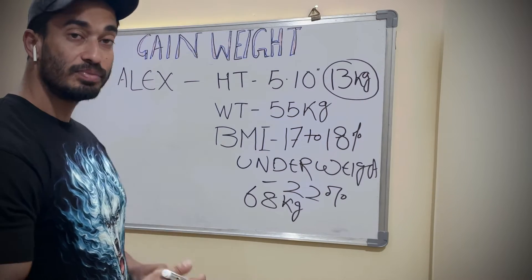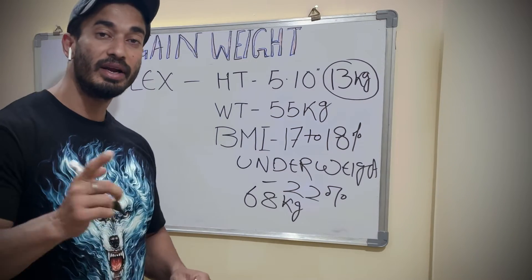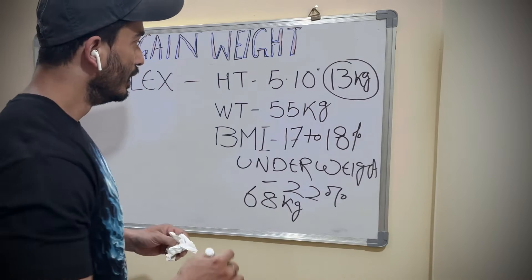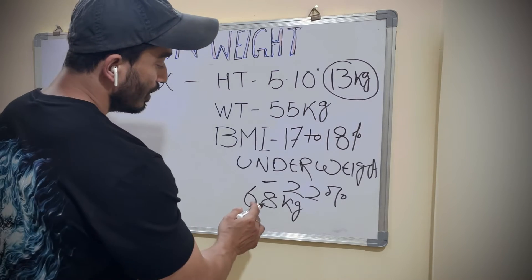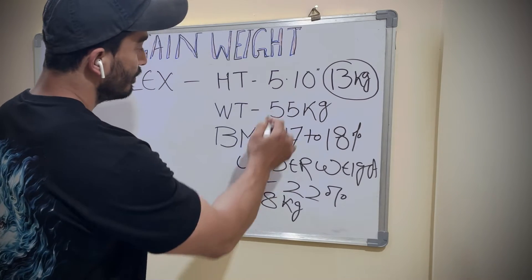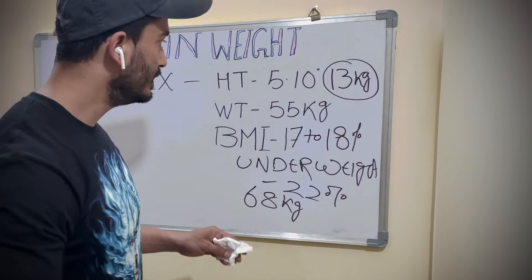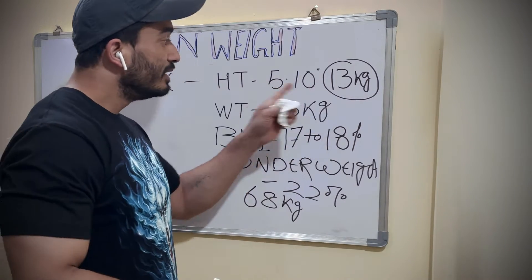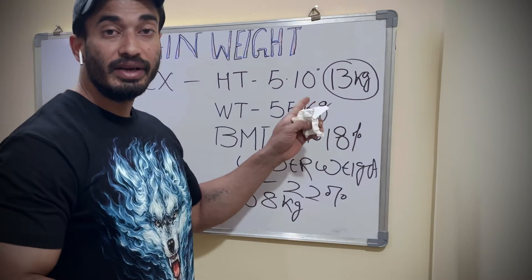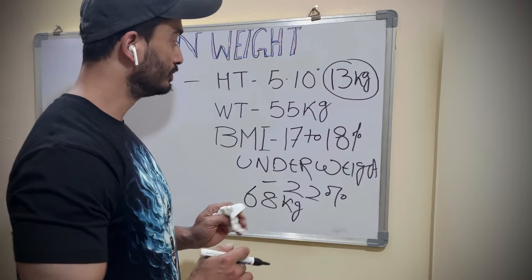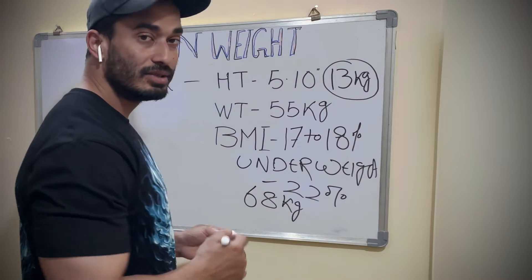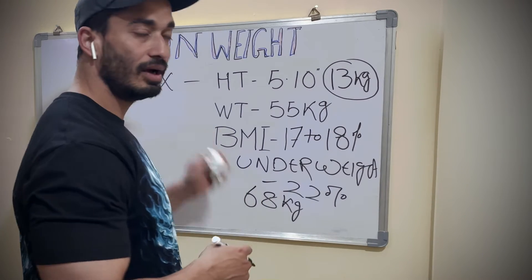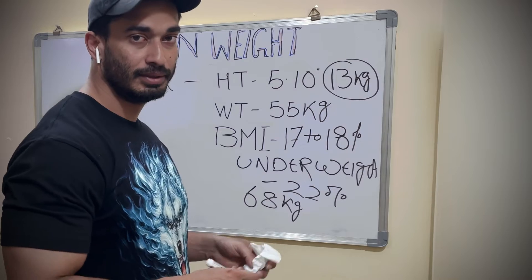The target BMI is supposed to be 22 percent. If you do the calculation, that comes to around 68 kg as per his target BMI. So target BMI is very important. Calculating from 55 to 68 kg, Alex needs to gain 13 kilos more. Let's see how we are going to achieve this target and in how many months.